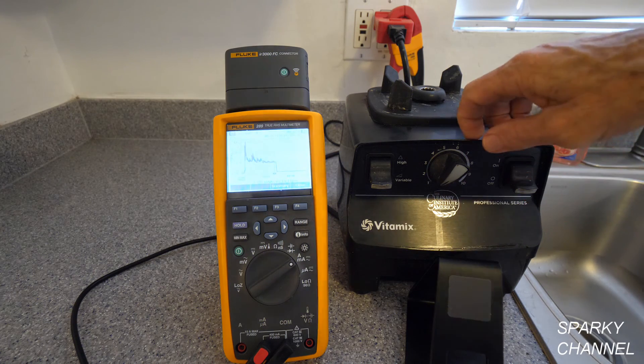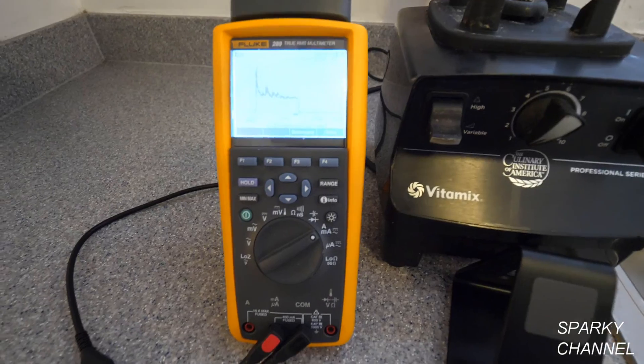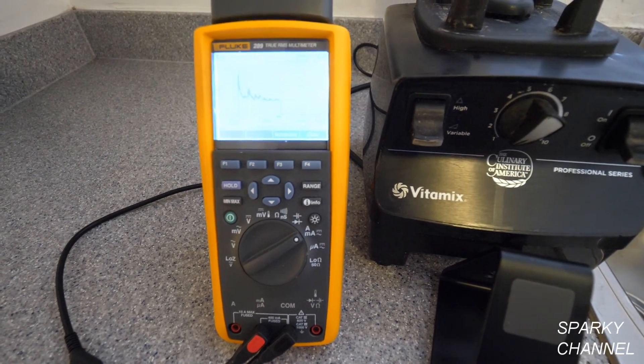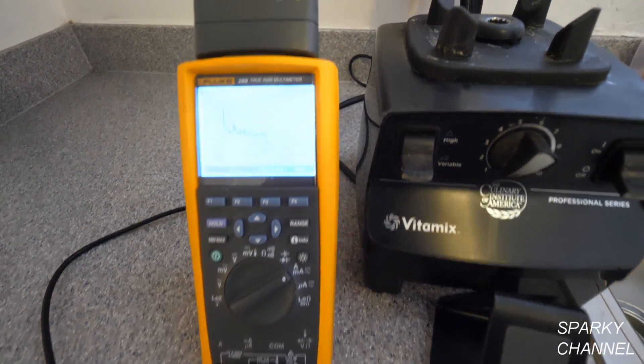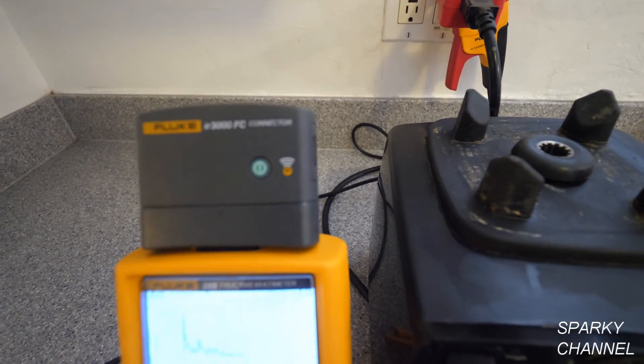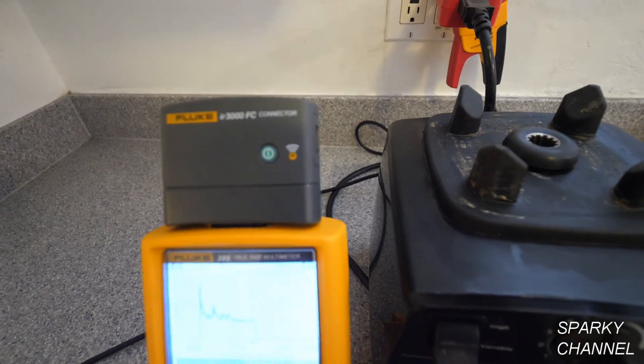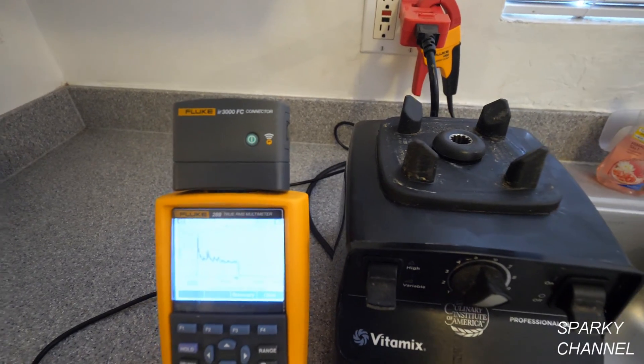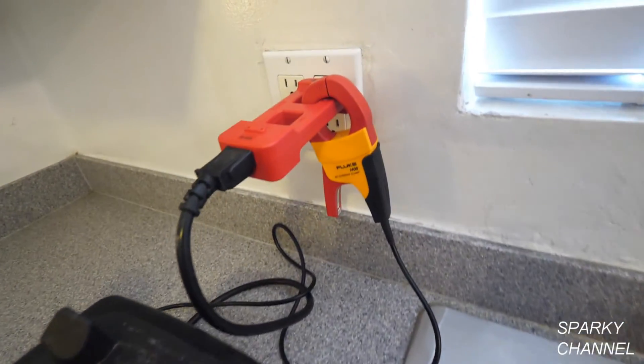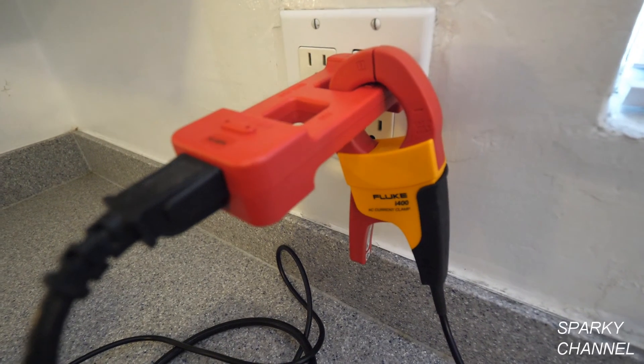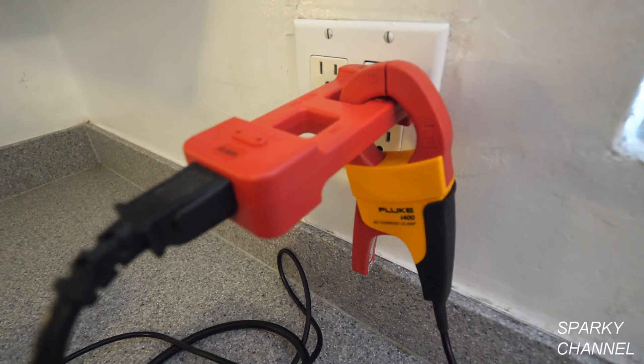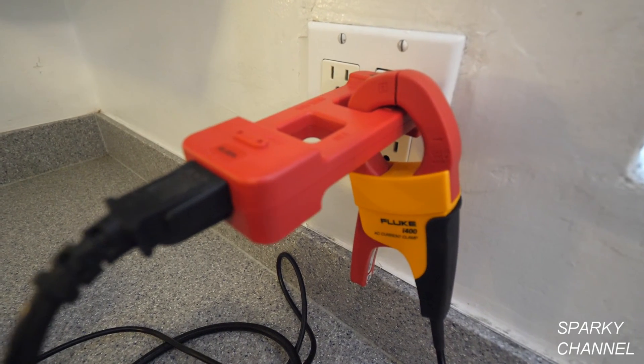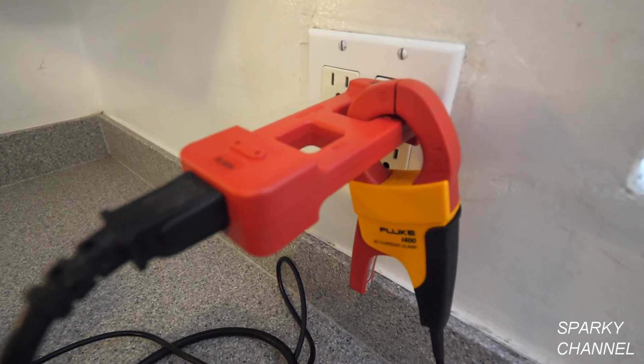I'll put links in my video description for the Fluke 289 logging and graphing meter, which is a 50,000 count meter. I'll also put links for the Fluke IR3000 FC connector, which will connect you wirelessly with your cell phone. And I'll put links for the Amp Probe AC line splitter. Amp Probe is a Fluke company. And I'll put a link for the Fluke I400 AC current clamp.